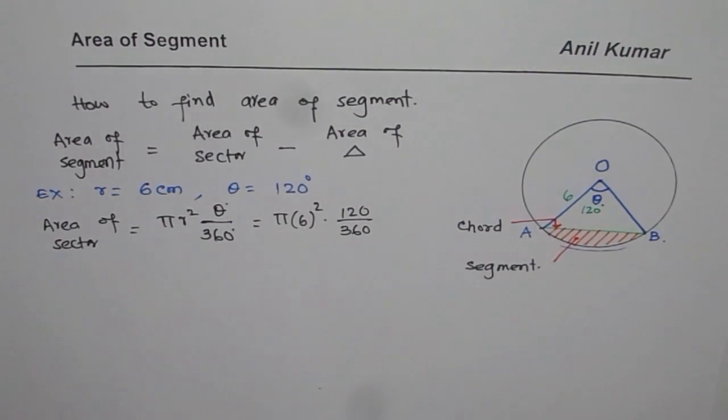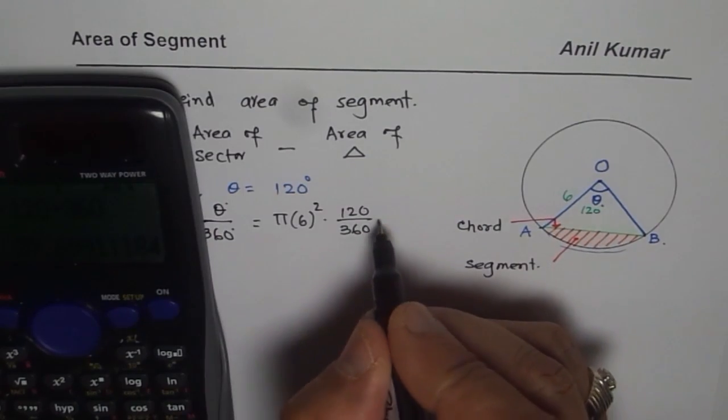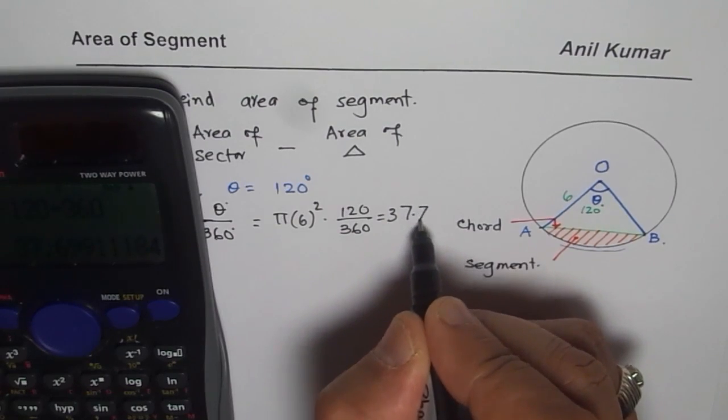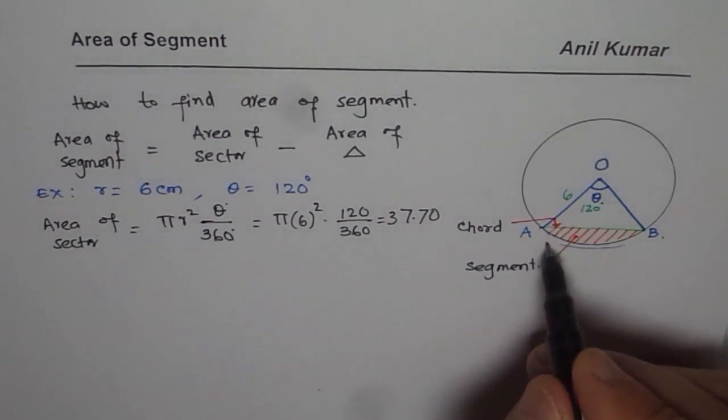So that gives us the answer. So we can use the calculator to find the answer. So we have pi times 6 squared, and then times 120 divided by 360. That gives us 12 pi, or in decimals, it is approximately 37.70. So I just rounded to two decimal places. So that is the area of the whole sector.